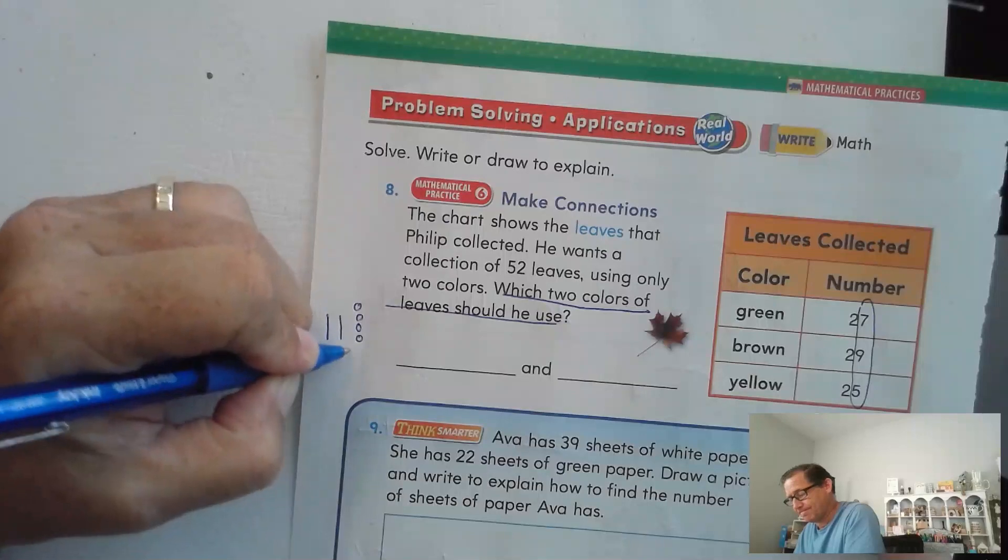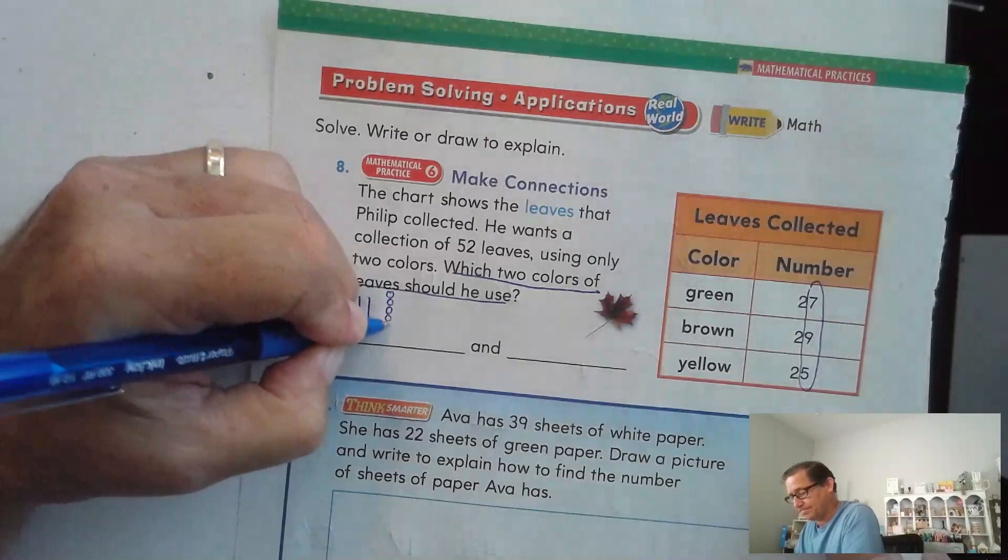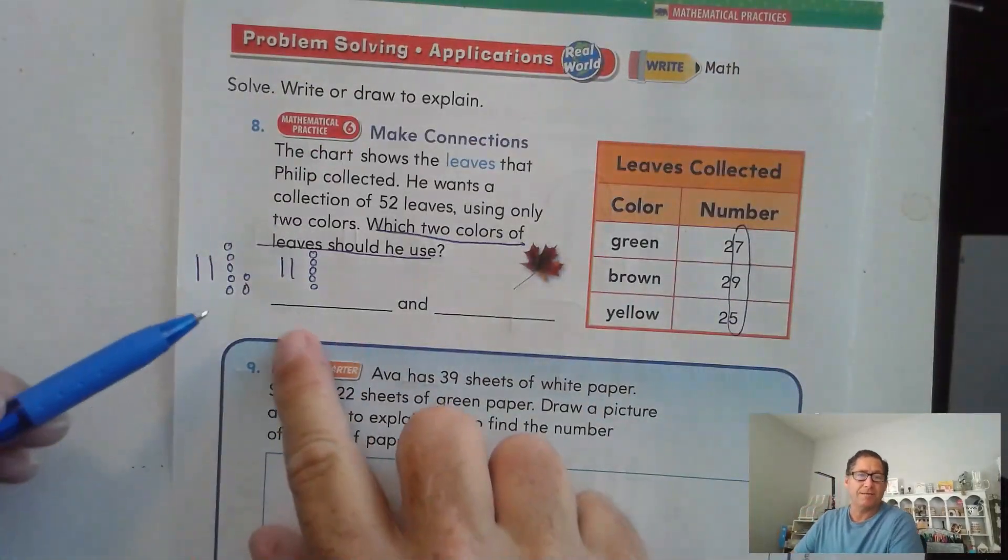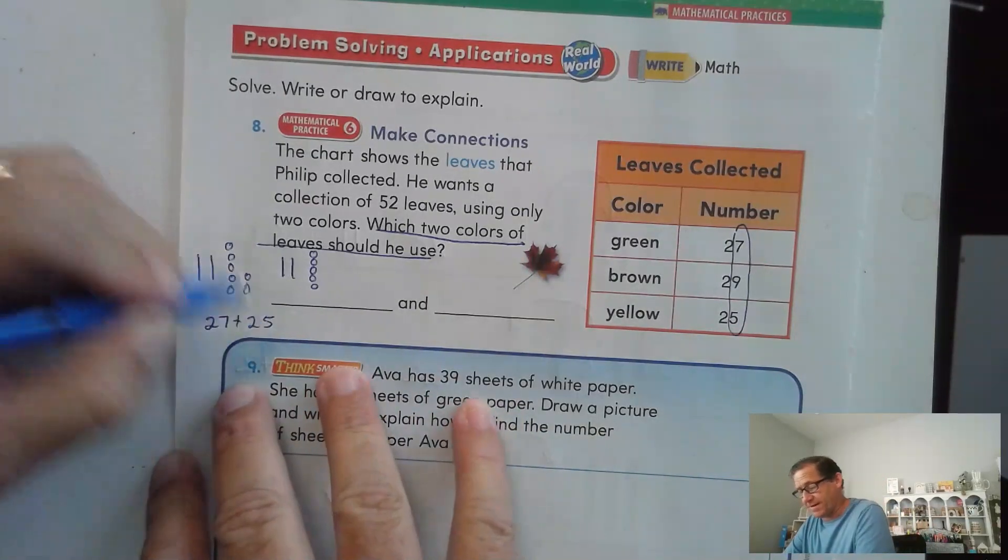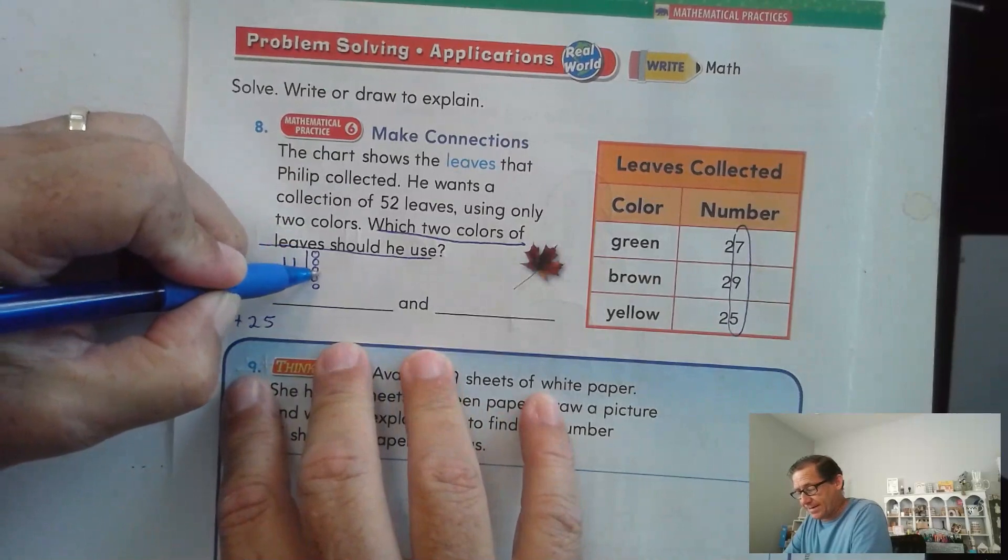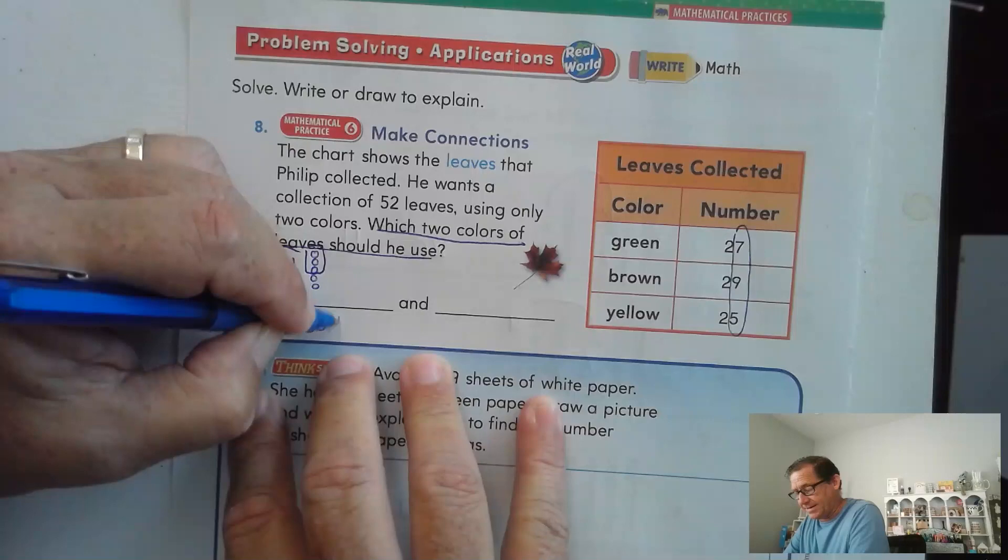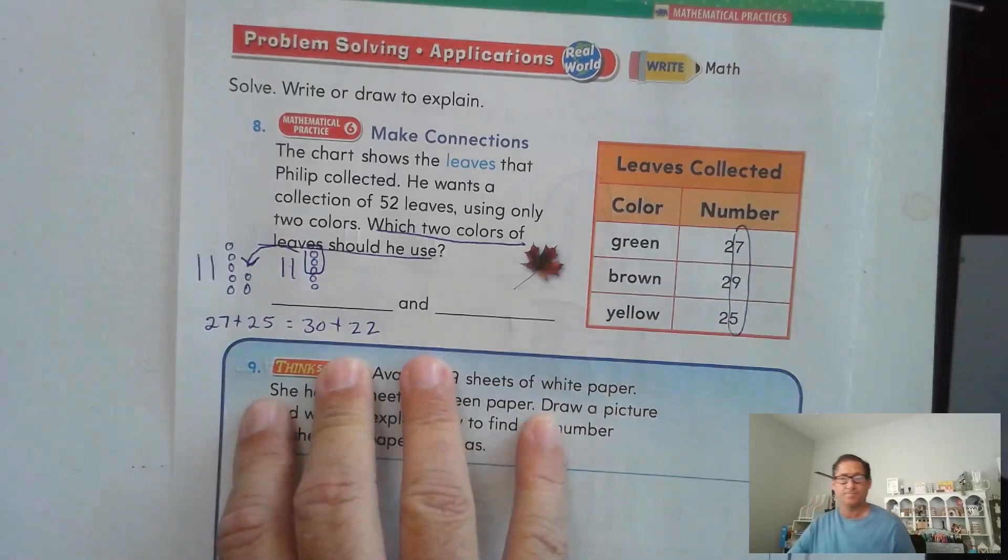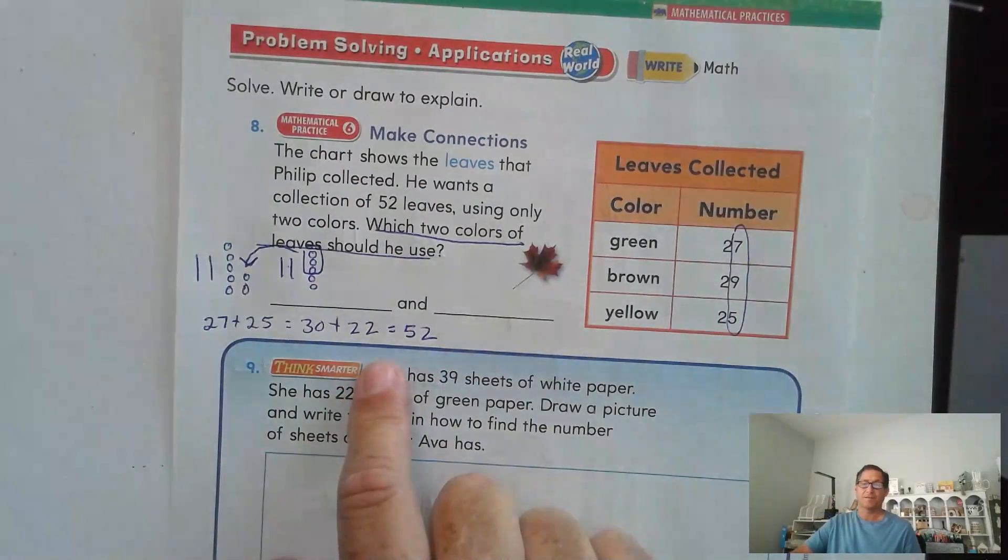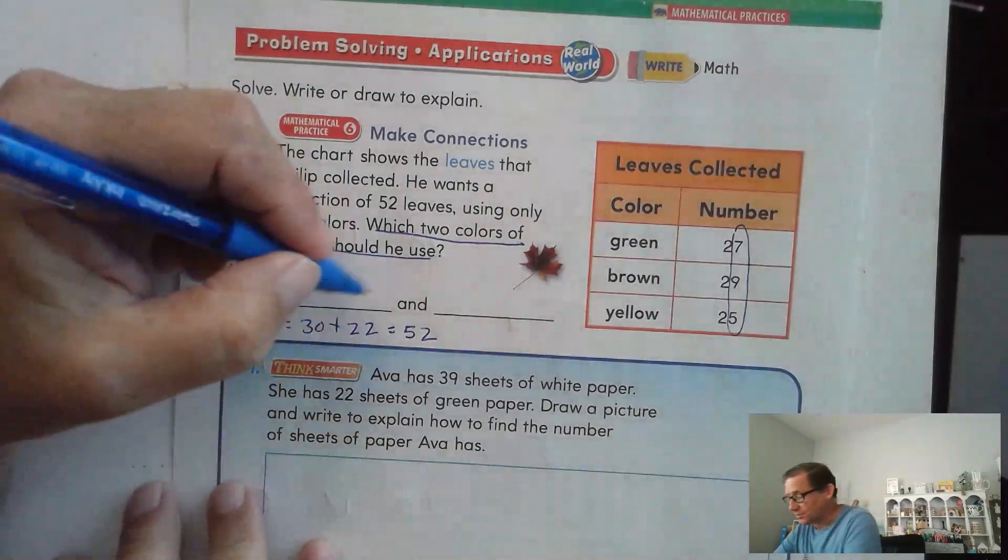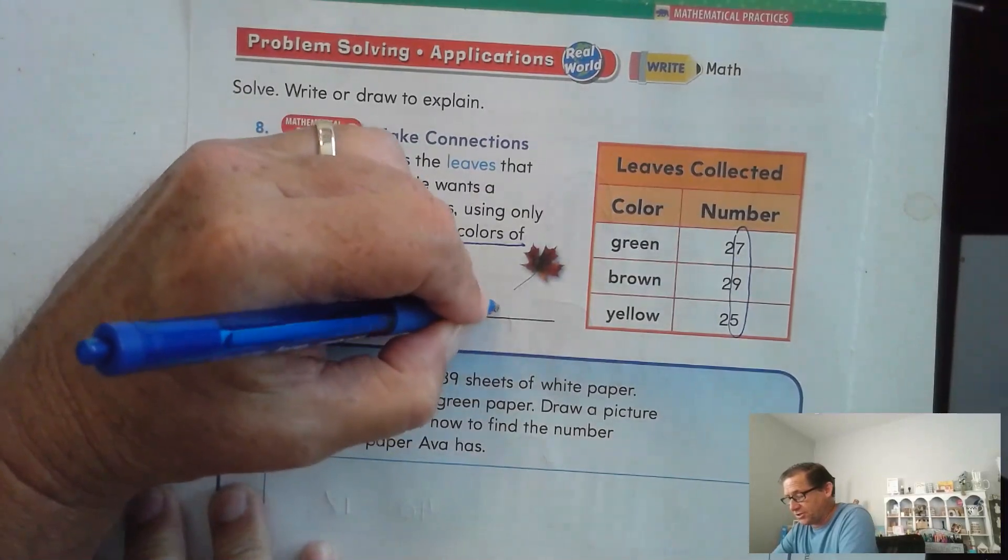How about these two? 27 and 25. Let's try it. 20, 7, 25. Alright. So let's see. We have 27 plus 25. Let's take three of the ones from 25 to make 30 plus 22. What's 30 plus 22? 52. So yes, green and yellow is what he should use.